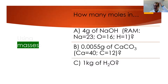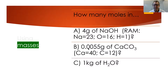Using those three triangles we should be able to work out almost anything. I'm going to ask you to pause this in just a minute and have a go at these little questions. It's asking — all masses — 4 grams here, 0.0055 grams, and one kilogram of different chemicals.